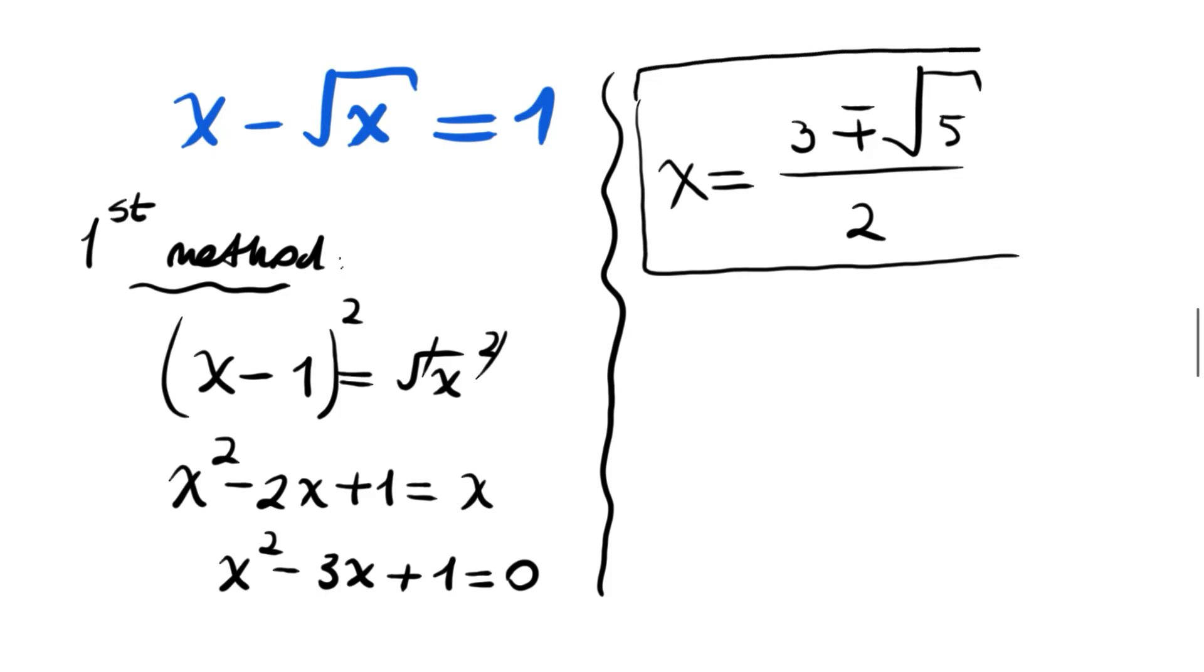These two should be positive since we have a root x term. 3 plus root 5 divided by 2 is obviously positive. 3 minus root 5 divided by 2 is also positive since 3 is greater than root 5. This is the first method, which is very easy to apply.